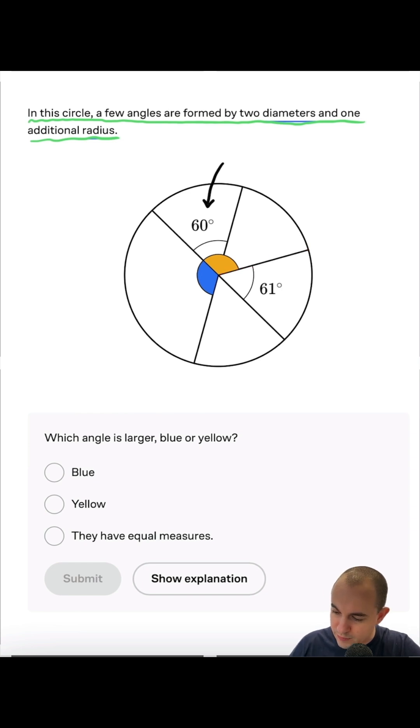We can also see that this part of the yellow angle is 60 degrees, and this uncolored part is 61 degrees angle. And we have to find which angle is larger, blue or yellow.